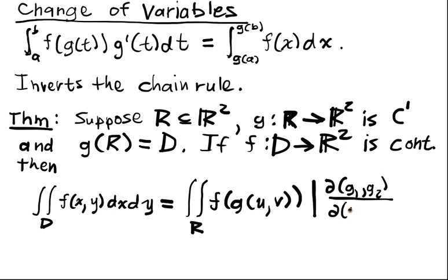d, u, v. That's the Jacobian, the determinant of the Jacobian of g, d u, d v.